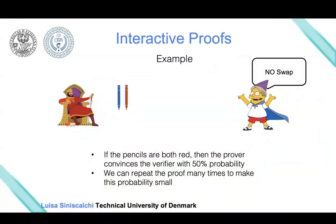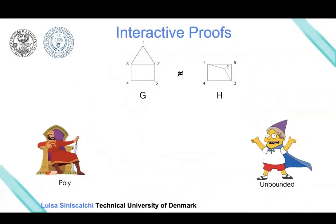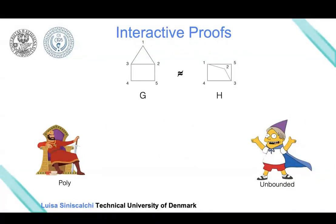This was a simple example of an interactive proof. Now we are ready to come back to proving that two graphs are not isomorphic. The prover is unbounded while the verifier is a polynomial time machine, and the prover wants to prove to the verifier that these two graphs are not isomorphic.